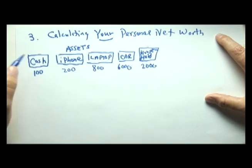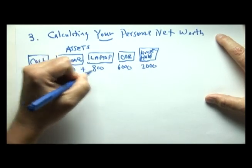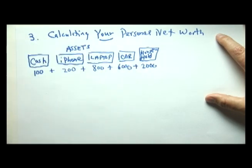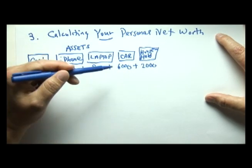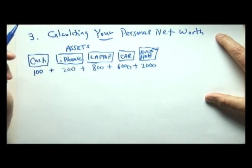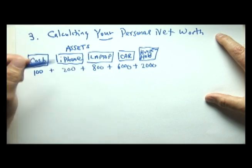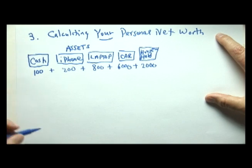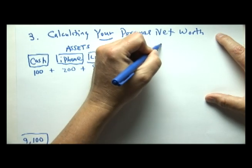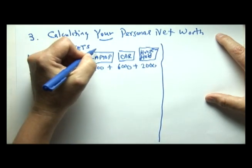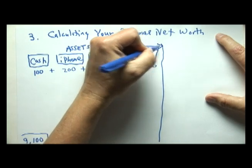Adding everything up: $100 plus $200 is $300, plus $800 is $1,100, plus $8,000 in car and household effects gives us total assets of $9,100. We recall from last lesson that anything an entity owns is an asset.